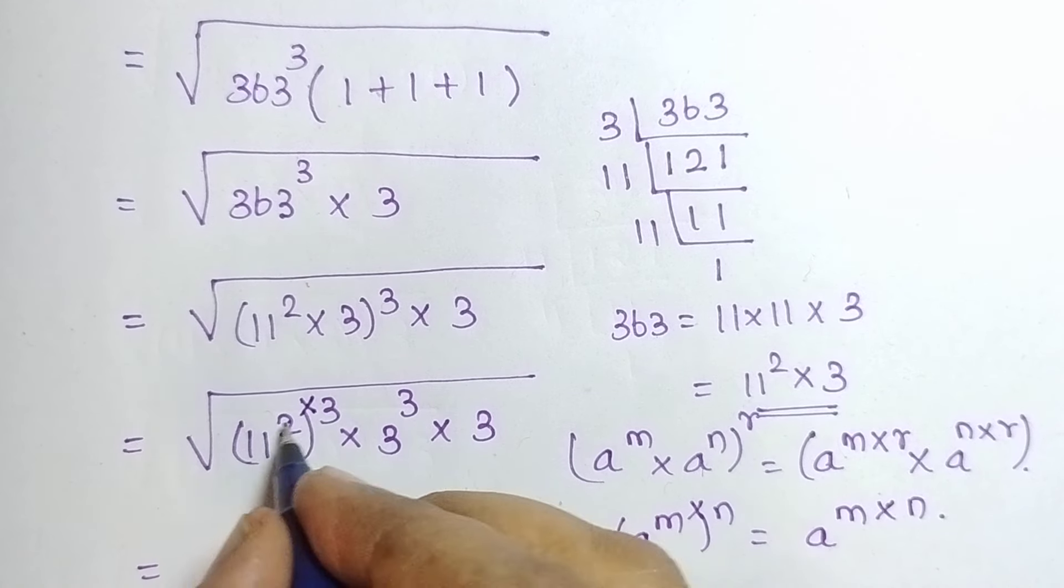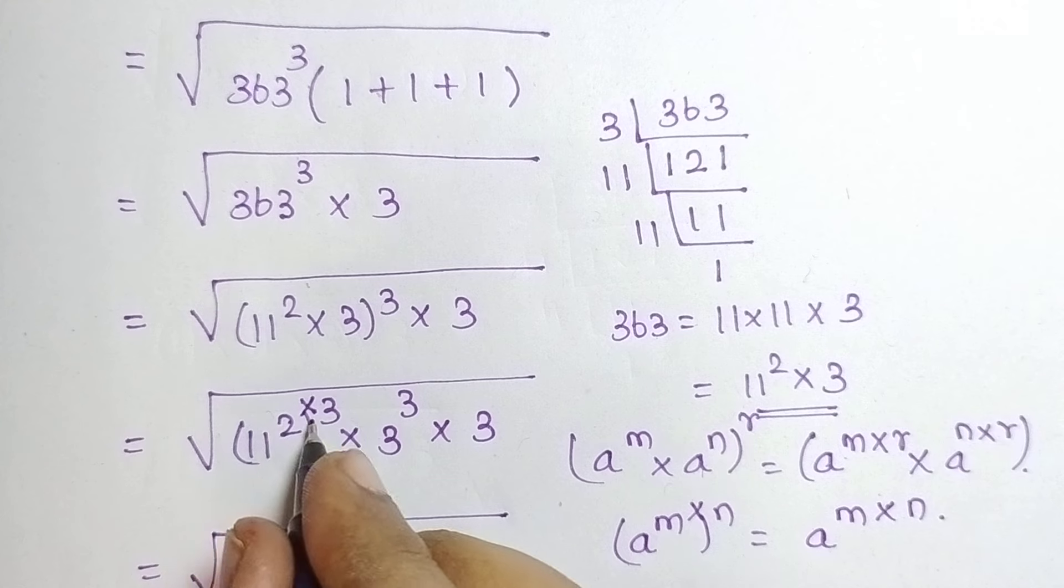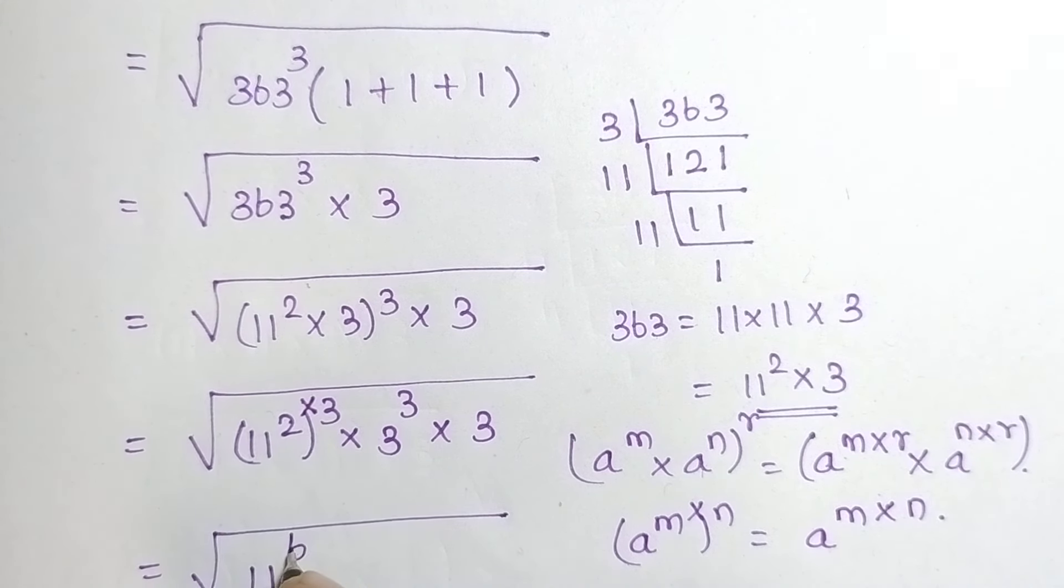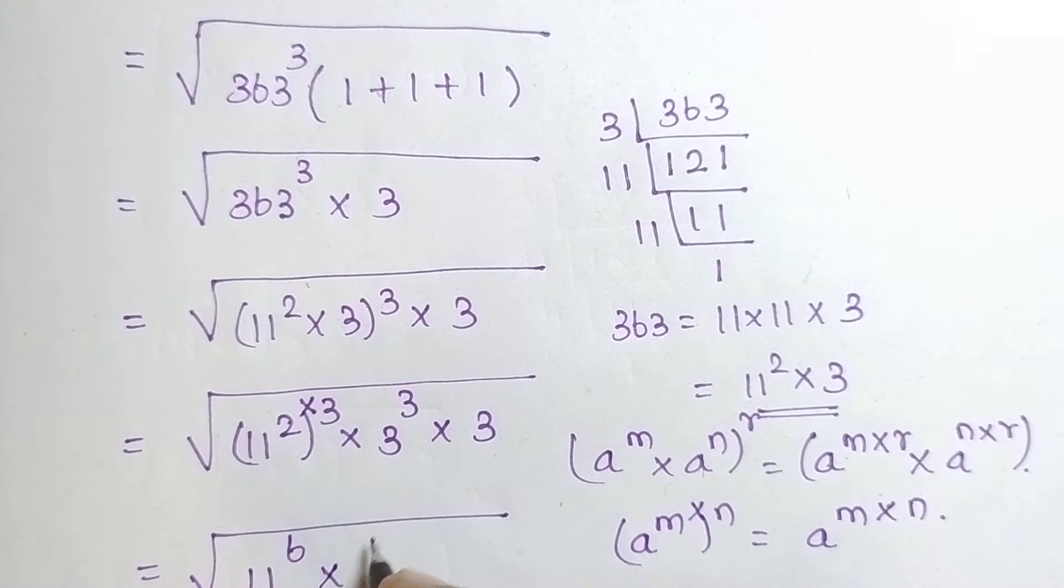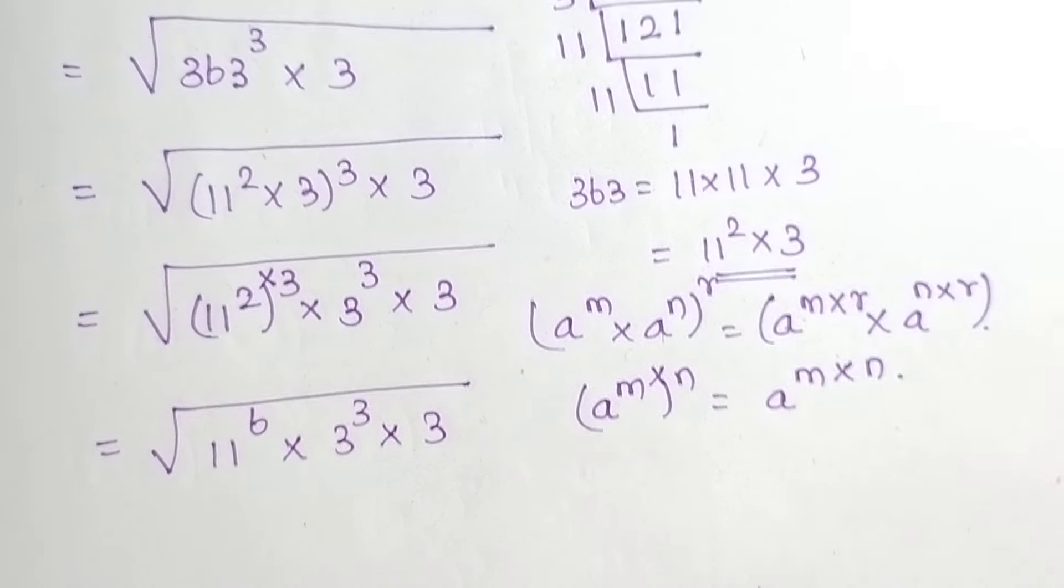Then, the root of 11, 2 into 3 is 6 into 3 power 3 into 3. Then, if the base is seen in multiplication, the power get added.